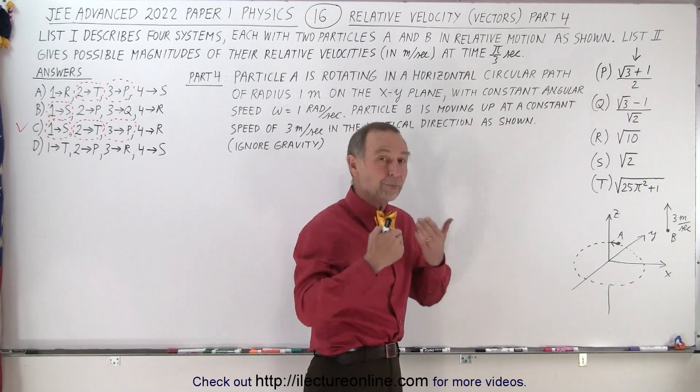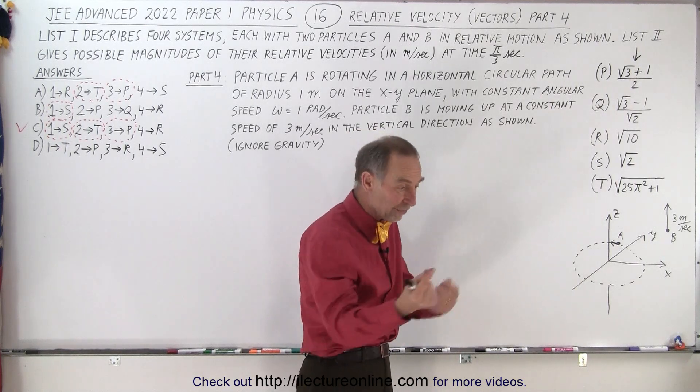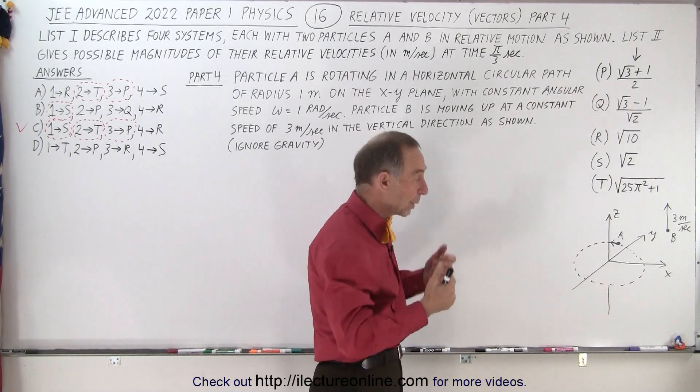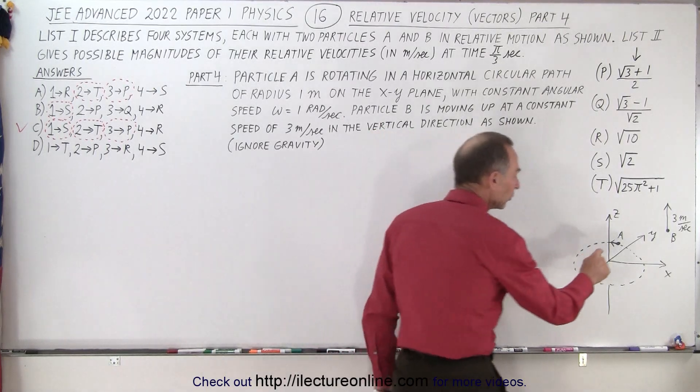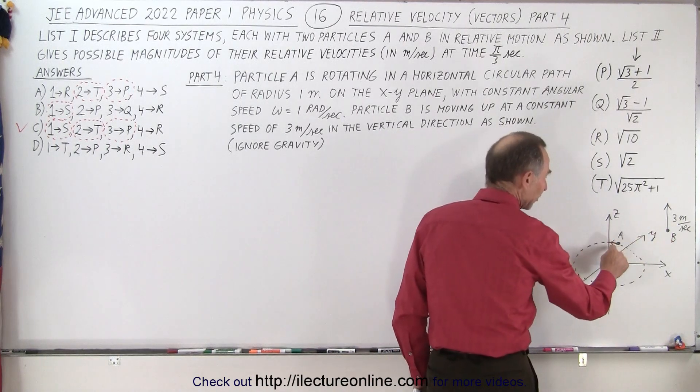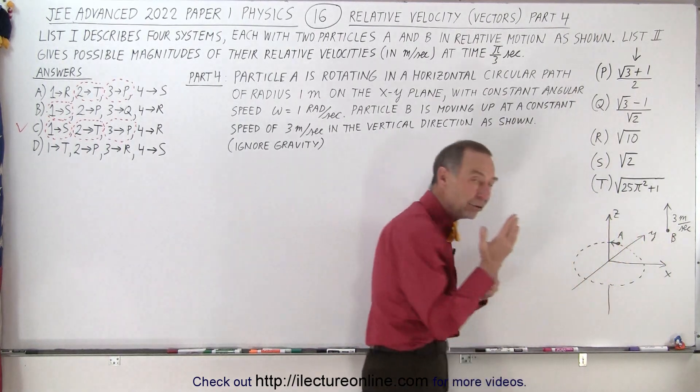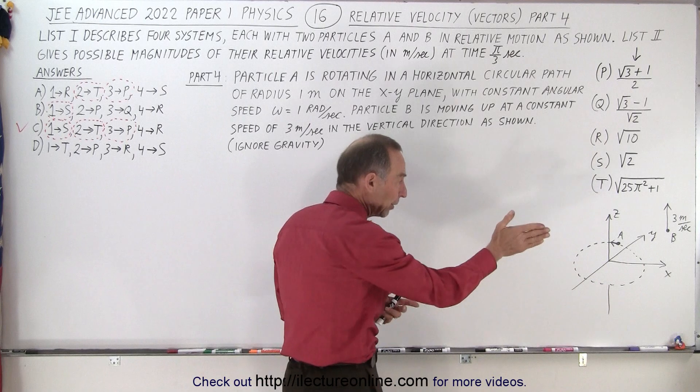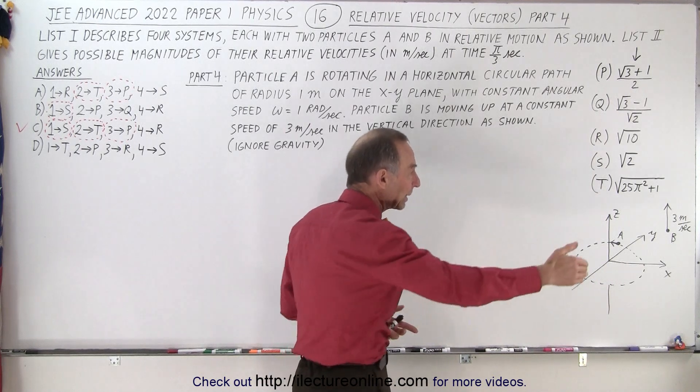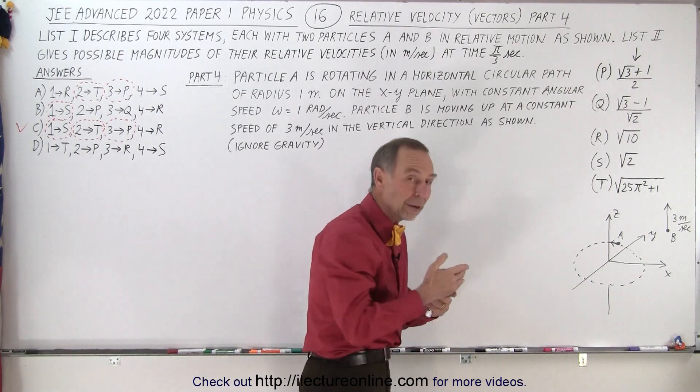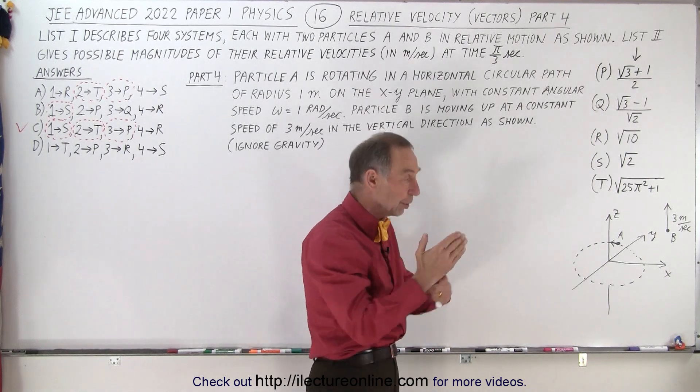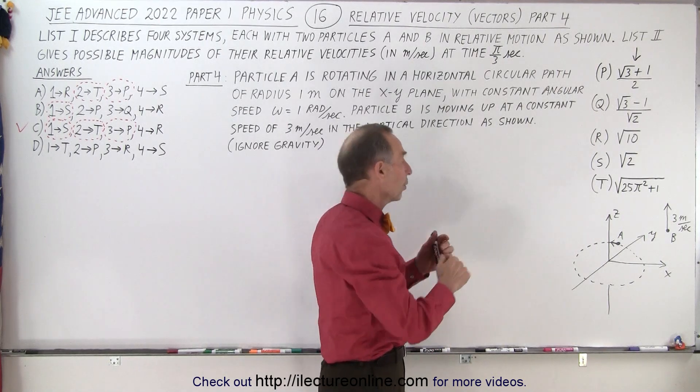But then of course, if we express their velocity as vectors, vectors can be moved anywhere we like. So essentially, we can put vector A and vector B, the velocity of A and the velocity of B, tail to tail. And it really doesn't matter at what point in its path A is traveling. You can see that the velocity of A will always be perpendicular to the velocity of B.